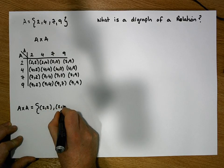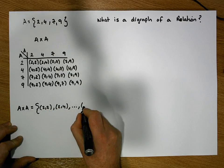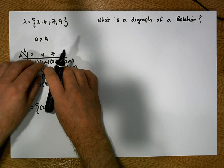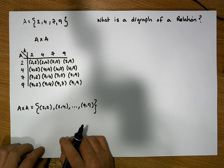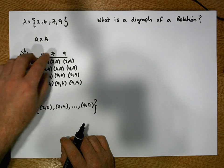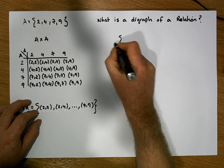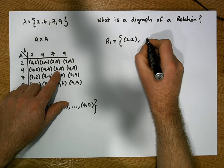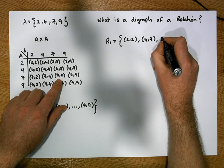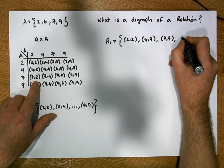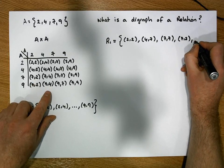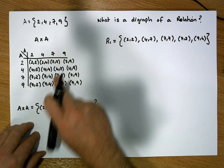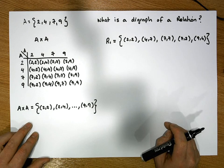So A cross A is the set that contains all of these ordered pairs, from (2,2) and so on up to (9,9). Now that we have the cross product, we're free to select any ordered pairs from that cross product and put them into a set. Let's create a relation R1 and say it contains (2,2), (4,7), and (7,7). This set is clearly a subset of the cross product, so by definition this set is a relation.